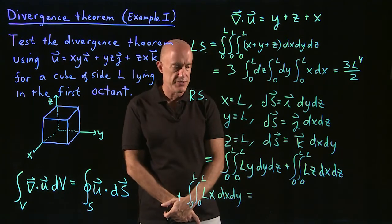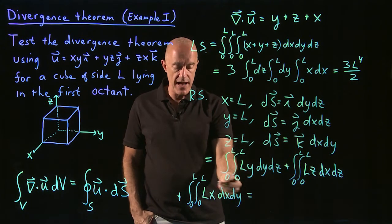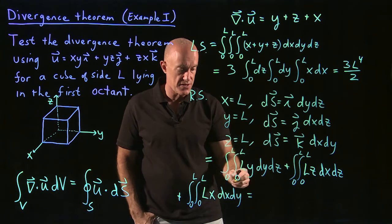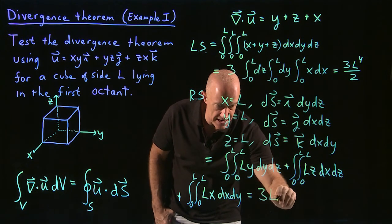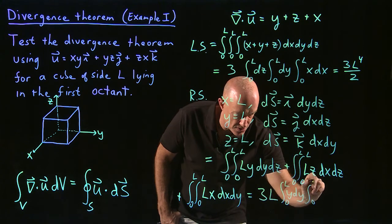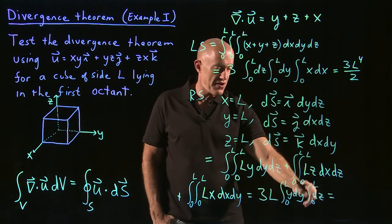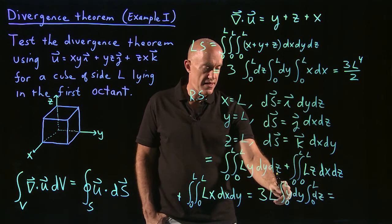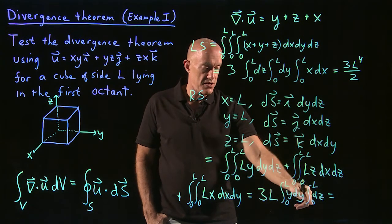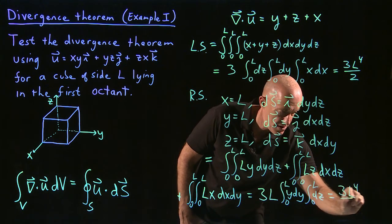The variables in all three integrals are dummy variables, so all three integrals are identical. We only need to evaluate one. Factoring out 3 and l, we get 3l times the integral from 0 to l of y dy times the integral from 0 to l dz. The integral from 0 to l dz = l, and the integral from 0 to l of y dy = l²/2. So the result is 3l × l²/2 × l = 3l⁴/2.